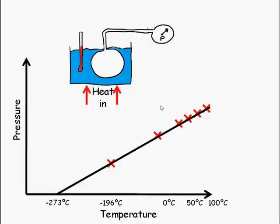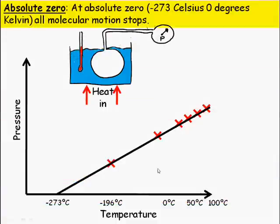If you use the particle model, then you would say that this is when all molecular motion stops. Absolute zero is minus 273 degrees Celsius, or we call it zero degrees Kelvin. Kelvin is just a very similar scale to Celsius—it's just that it starts at zero at minus 273 degrees Celsius and it goes up in the same order of magnitude as each degree Celsius would do. So one degree Kelvin is the same jump as one degree Celsius.